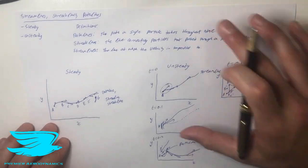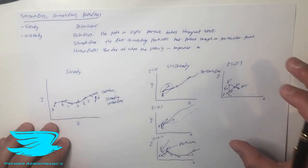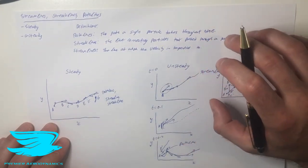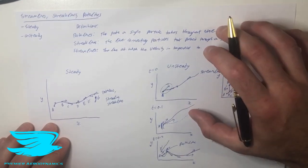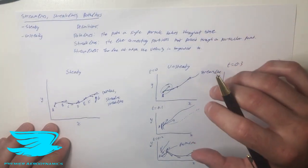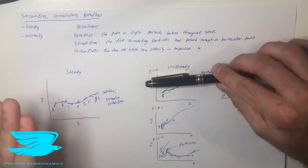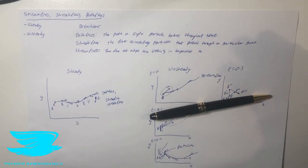That is how pathlines, streaklines, and streamlines are different and similar depending on whether you have the steady case. I hope this clears up a lot of things, because these nuanced definitions are important. If you want to know anything more, let me know in the comments. Make sure to like and subscribe. If you want to explore this topic further, check out Fundamentals of Aerodynamics by John D. Anderson — probably the best textbook for fundamental aerodynamics. You'll find the link in the description. See you in the next video.